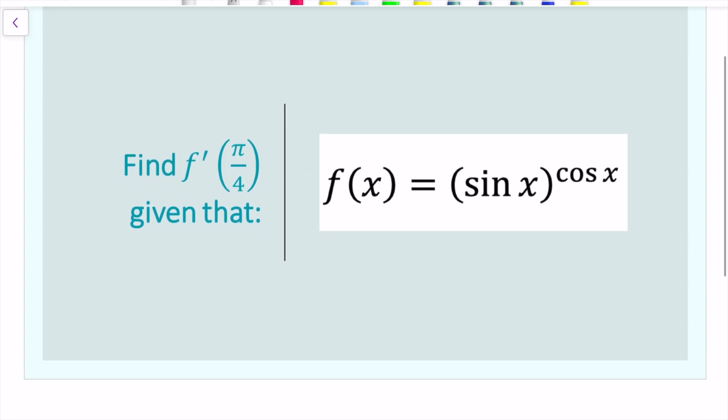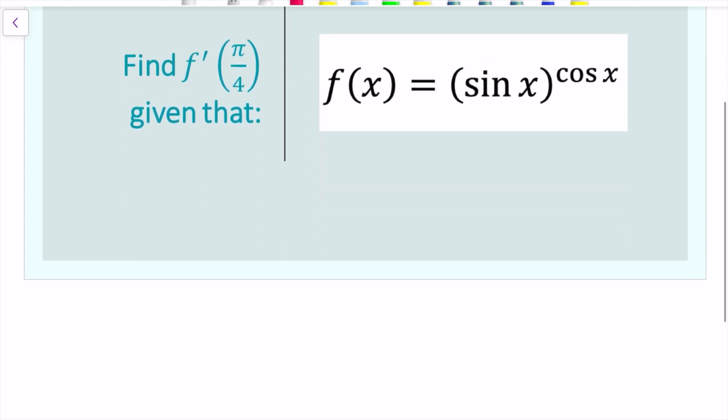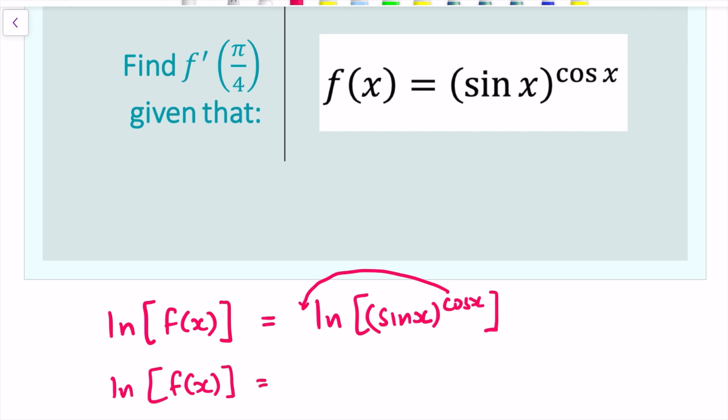So if we log both sides of this expression and we use the natural log because we know the derivative of it. So I've got ln of f of x is equal to ln of sine of x all to the power of cosine of x. I can use the log rule which states that that power there can drop down in front of the logarithm. So ln of f of x is equal to cos x multiplied by ln of sine of x.